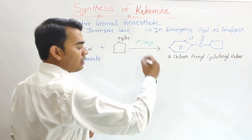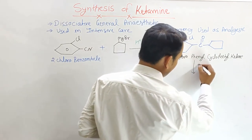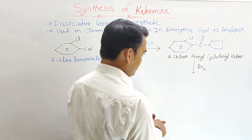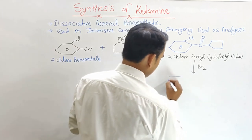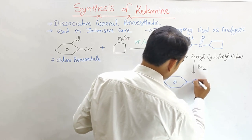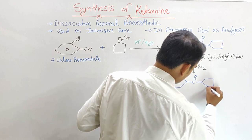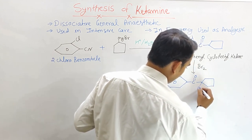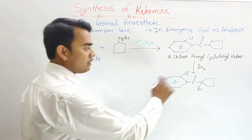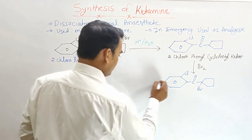Now this 2-chlorophenyl cyclopentyl ketone is reacted with bromine. The bromine attaches here — there is already chlorine on the second position — and a second intermediate forms.